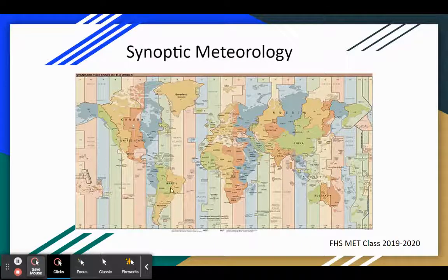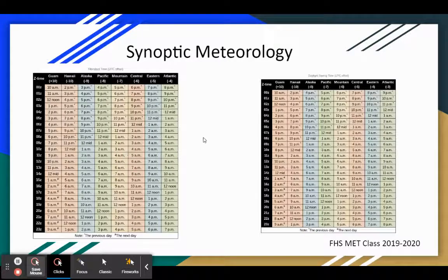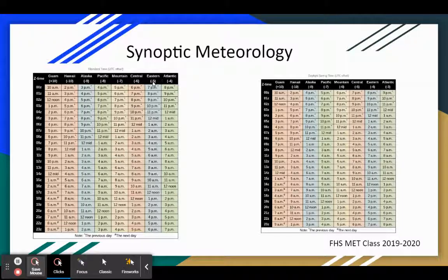Here's a map of the different time zones in the entire world — 24 different time zones. Here's the eastern time zone that we're in here in Michigan, and then we have central time, mountain time, and Pacific time in the United States. Right now we're in daylight saving time mode. In the eastern time zone, we subtract four hours during daylight saving time. In the fall, when we go back to eastern standard time, we subtract five hours to determine the Zulu time.